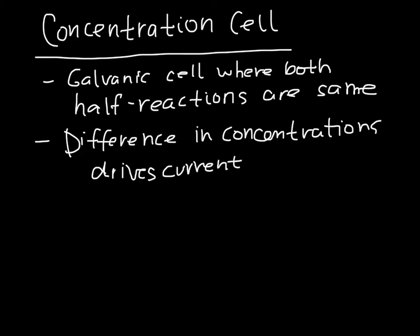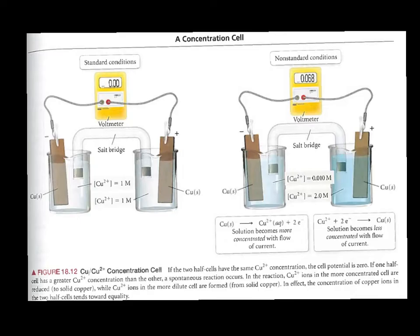Let's look at an example of one of these. Under standard conditions, on the left, if we had a copper anode and a copper cathode and the concentrations of the copper ions in solution were the same, we would see no flow of current, and we see that reflected here in this zero volt.